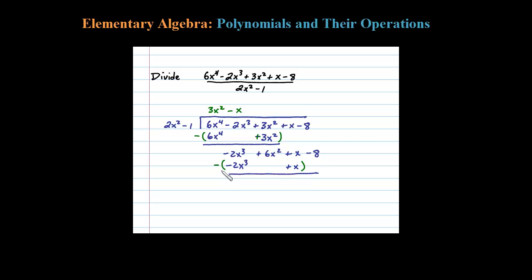After lining up, you then subtract. When you subtract a negative you're really adding, so negative 2x cubed plus 2x cubed is zero. Distributing the negative — this is really subtraction — so x minus x is also zero. Now let's bring down the remaining term: 6x squared minus 8.